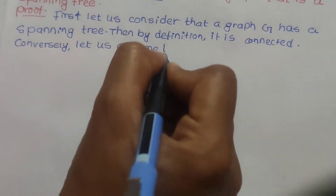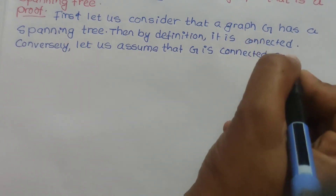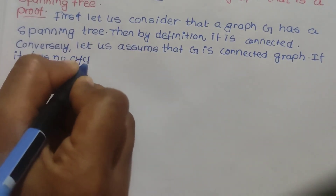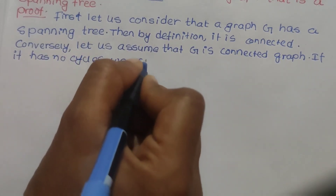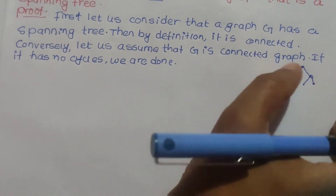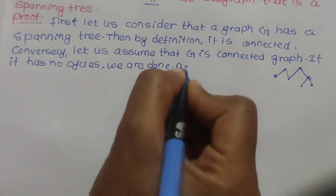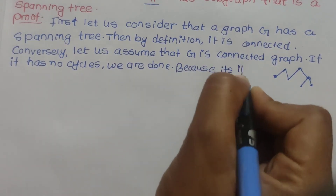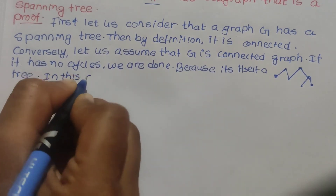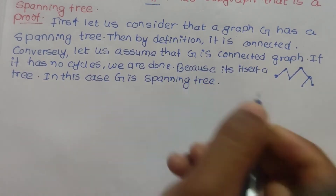Conversely, let us assume that G is a connected graph. Then if it has no cycles, we are done — it is itself a tree. In this case, G is already a spanning tree of the connected graph.